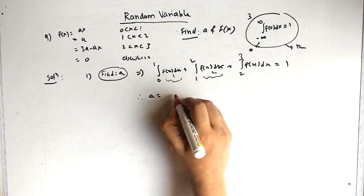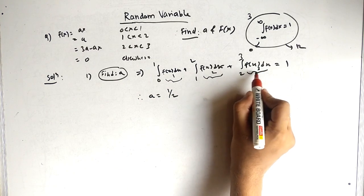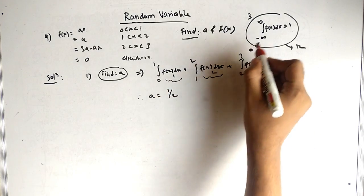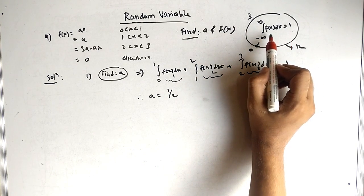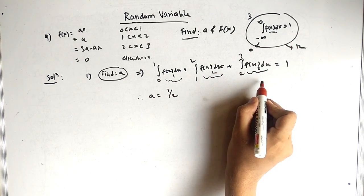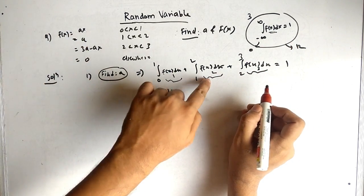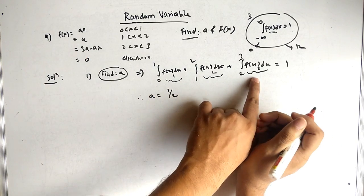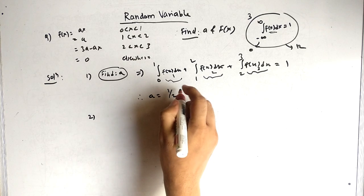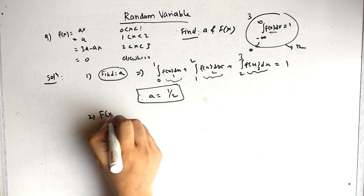After solving this, we get the value of a equal to one half. Now the important part is finding capital F(x). Here we have three different f(x) values — ax, a, and 3a minus ax — so we substitute a = 1/2 into each piece accordingly.